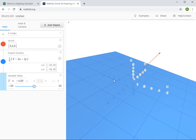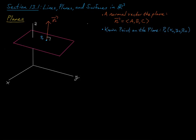These two ingredients uniquely identify the plane: a normal vector, which I'm going to call n with components a, b, and c, and a known point on the plane, which I'll call p0 with coordinates x0, y0, z0. Now, I'm going to call the position vector for the point p0 the vector r0.